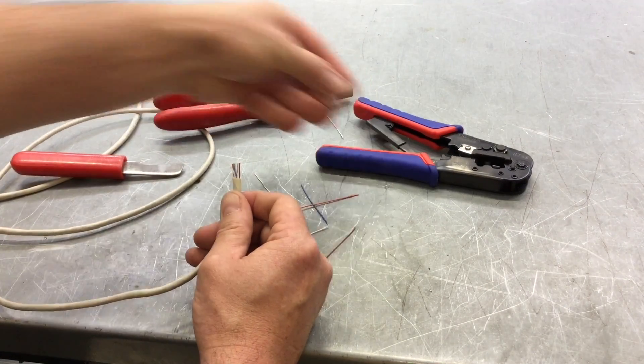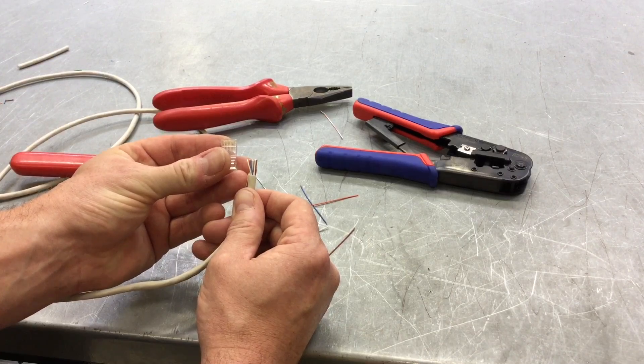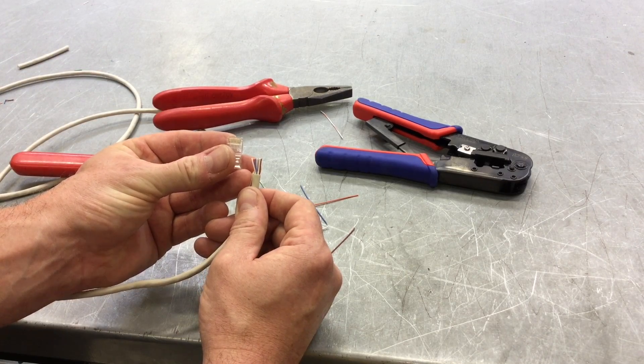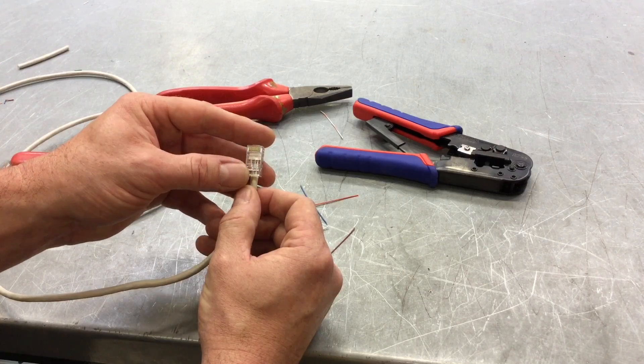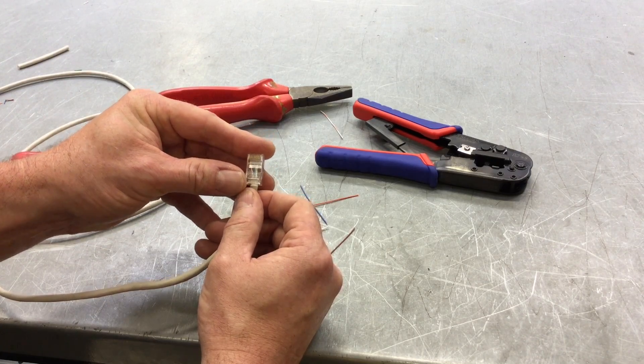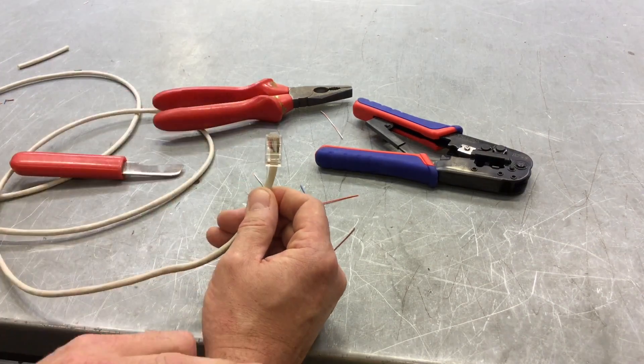Next we slide on the RJ45 end, remembering that we've got the gold connections at the top section as we slide it into position. And it should go relatively easy, believe it or not, into the actual positions it needs to sit in. They sort of find their way home, so it just slid straight on there.